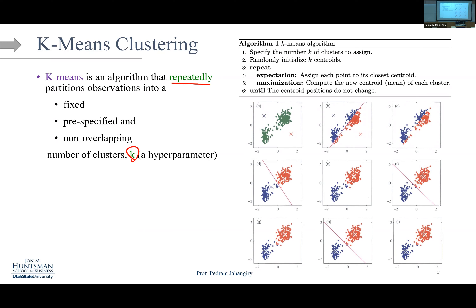Step one: specify the number of clusters k — let's say k equals 2. Then randomly initialize the model with k centroids. You pick two points anywhere in the space — for example, one blue centroid here and one red centroid here. A centroid is the arithmetic mean position of the data in a cluster. Each cluster will be characterized by the position of its centroid.